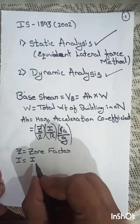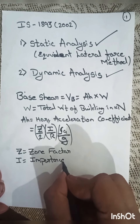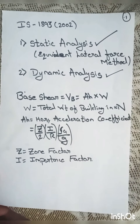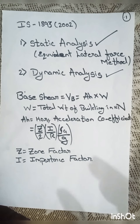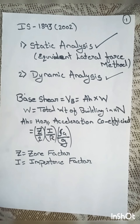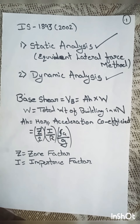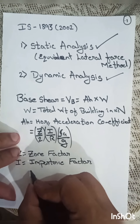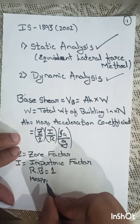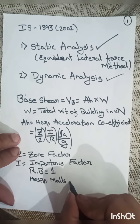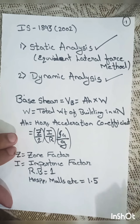I is the importance factor. Depending on the type of structure being constructed, we decide its value. For a general residential building, it is 1. For special buildings such as hospitals, malls, auditoriums, or stadiums — where large numbers of people gather — we take it as 1.5, meaning we increase the analysis values by 50 percent.